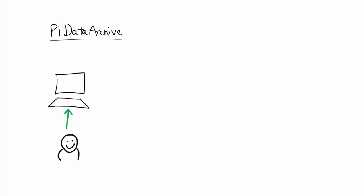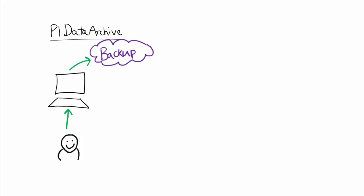In general, a backup is a copy of your information in case the original is damaged or lost. When it comes to your PI Data Archive, a backup is a copy of both your data or your archive files themselves, as well as the configuration information that is necessary to restore your PI Data Archive to its exact customized configuration. A backup works such that you copy your configuration information and data to a specified location, which can then be used to restore your system on a new machine.